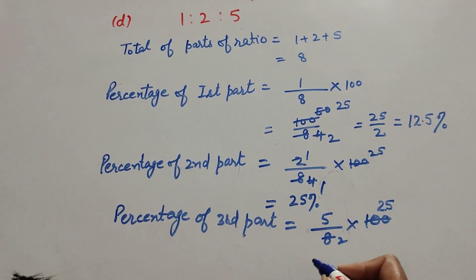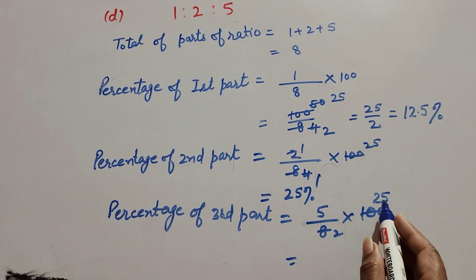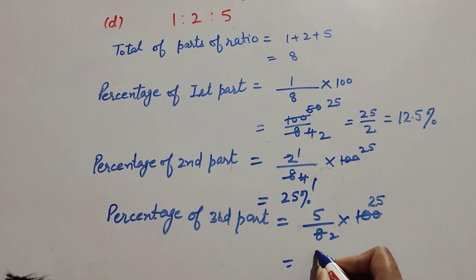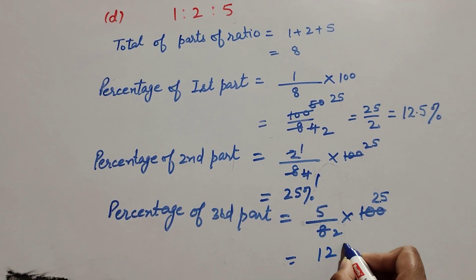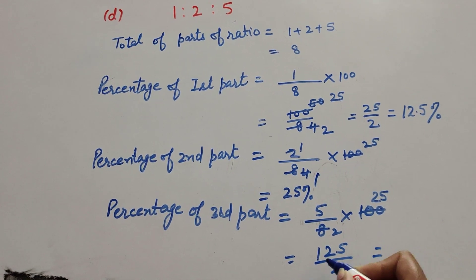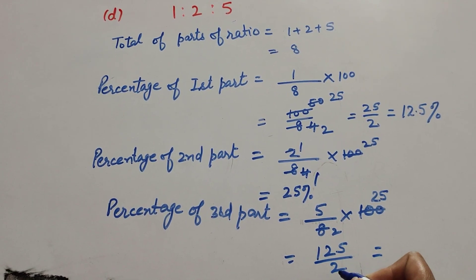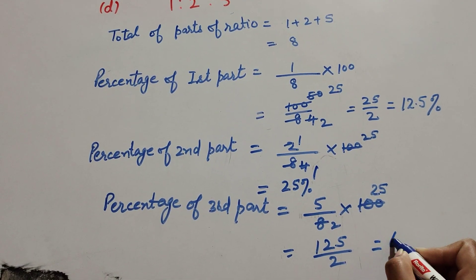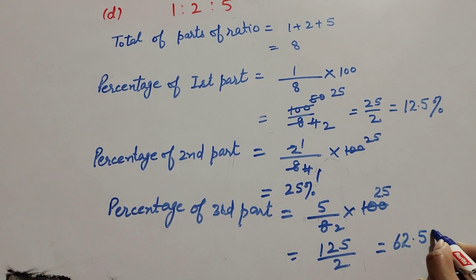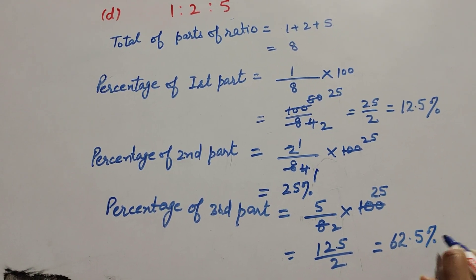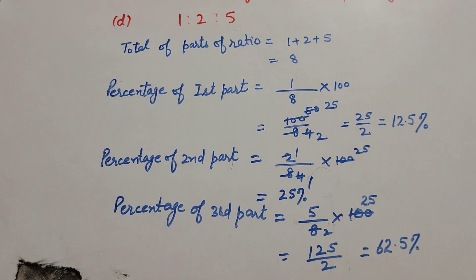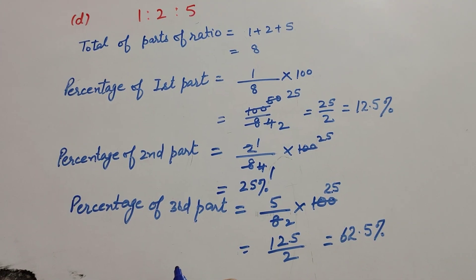So it is equal to five multiplied by twenty five, which is one hundred twenty five over two. One hundred twenty five divided by two gives us the answer sixty two point five percent. So the percentage of the third part equals sixty two point five percent.